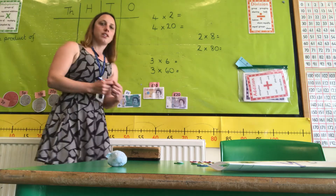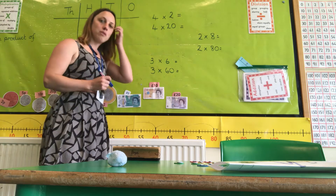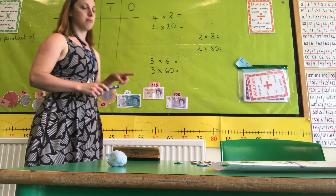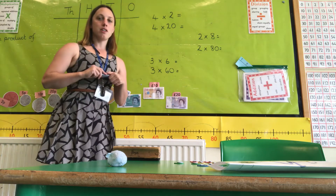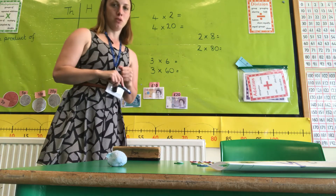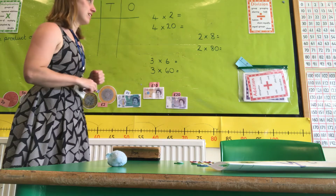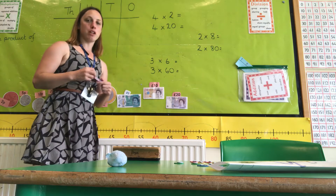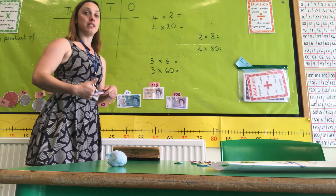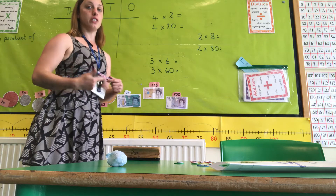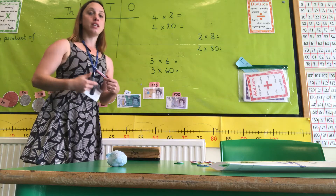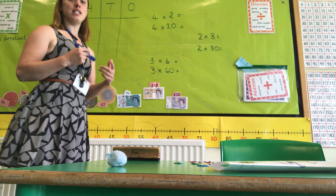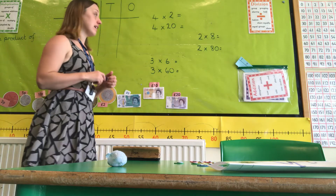Hi, we like labs. In this video we are going to look at how we can multiply a number by a multiple of 10. So this time, instead of multiplying by 10, we might multiply by 20, 30, 40, 50, 60, 70, 80, or 90.